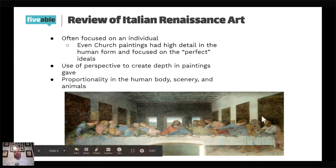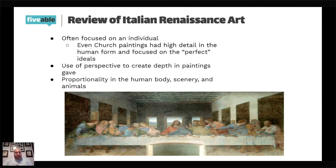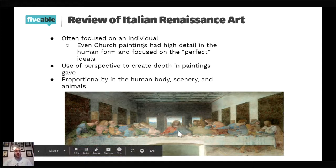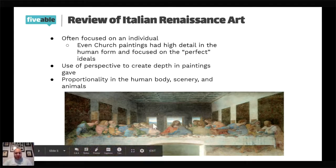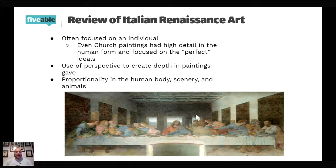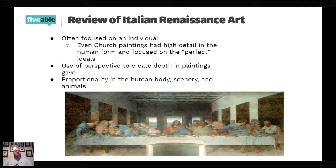In The Last Supper, your eyes are automatically drawn to Christ in the center because of the perspective of depth and the placement of the apostles in the foreground. Medieval art lacked depth perception — no foreground, midground, or background. The proportionality here also gives understanding of the scenery: mountains through the windows, the size of the table relative to those sitting at it — things we never saw in medieval art.